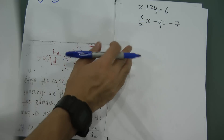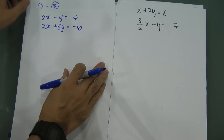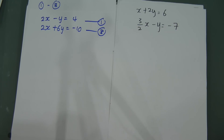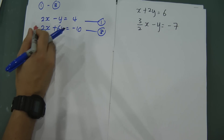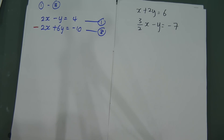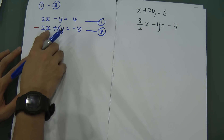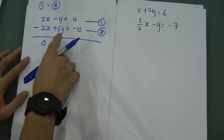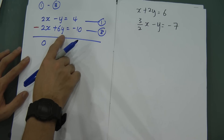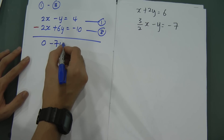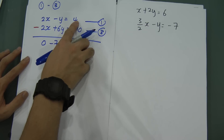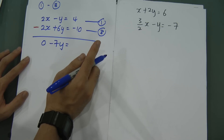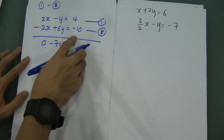Doing 1 minus 3, I put a minus sign here — the minus is very important because sometimes you get a wrong value by forgetting it. So 2x minus 2x gives zero. Then negative y minus positive 6y gives negative 7y. And 4 minus negative 10: minus times minus gives positive, so 4 plus 10 gives 14.